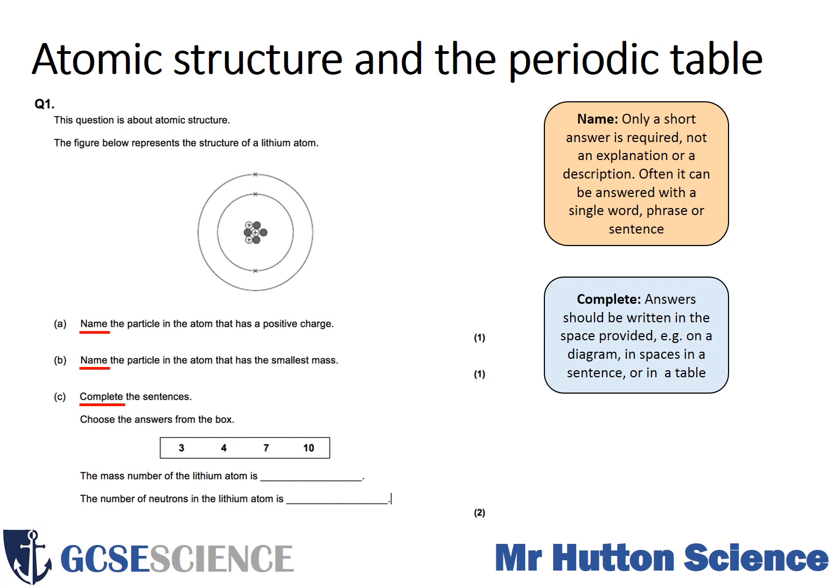For the third part — 'complete' — this should be written in the space provided, either on a diagram or in the spaces at the end of the sentence. You need to choose a number from the box that most appropriately matches the statement before it. The mass number of the lithium atom and the number of neutrons in the lithium atom are what's required. Remember, on the periodic table the mass number is the top number and the proton number is the bottom number — you can use those two numbers to work out the number of neutrons.